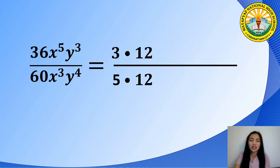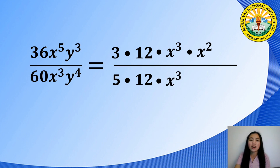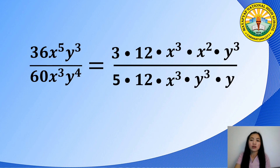The same goes for the literal coefficients. The common factor of x to the fifth power and x to the third power is x to the third power. So we can write x to the fifth power as x to the third power times x squared, and x to the third power as x to the third power. The common factor of y to the third power and y to the fourth power is y to the third power. So we can write y to the third power as y to the third power, and y to the fourth power as y to the third power times y.